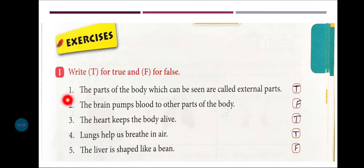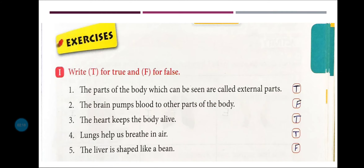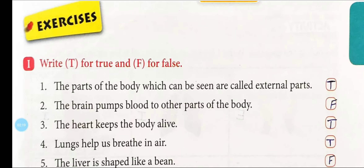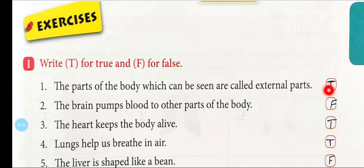Number one: 'The parts of the body which can be seen are called external parts.' देखो बच्चों, जो body के parts हैं जिन्हें हम देख सकते हैं, वो external parts होते हैं — तो यह सही बात है। तो इसके लिए हम यहाँ लिखेंगे T।